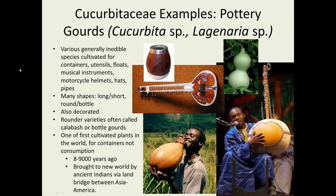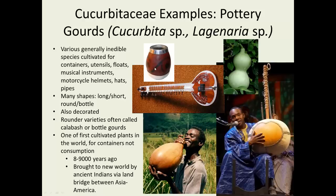Cucurbitaceae is very important in the production of things used for vessels. The ability to make a round structure is used for containers of all sorts and sizes, utensils, floats to keep nets up in the water, musical instruments, motorcycle helmets — though I think I would probably prefer fiberglass — hats of all types, and pipes. There are many different shapes: long, short and squat, round, or bottle-shaped, like the gentleman in the lower left — you can see how that would be quite convenient for transporting drinking water. Sometimes they're decorated very ornately, and when used for musical instruments, there's something that looks kind of like a ukulele in the upper left with very elaborate decor.